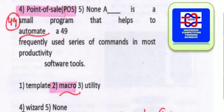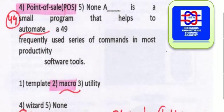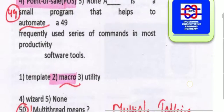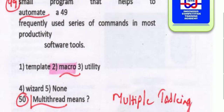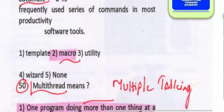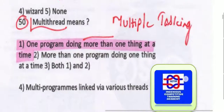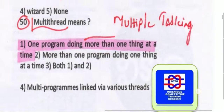A small program that helps to automate frequently used series of commands in most productivity software is called a macro. Multi-thread means one program doing more than one thing at a time — it is a type of multitasking. Thank you guys, I hope all these 50 questions will help you. These are all previous year questions. Have a good day and a great life.